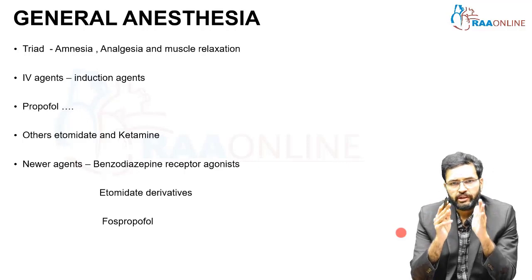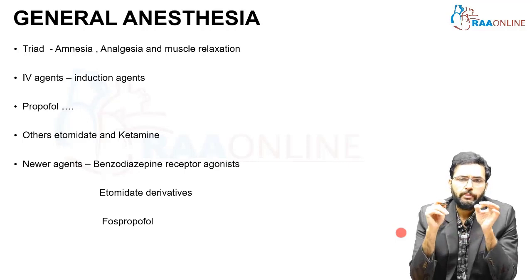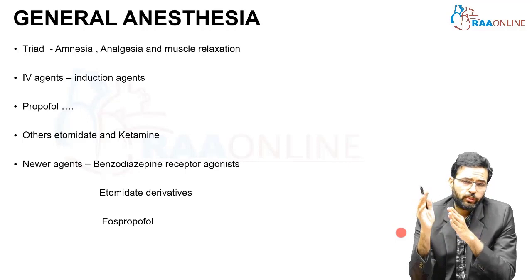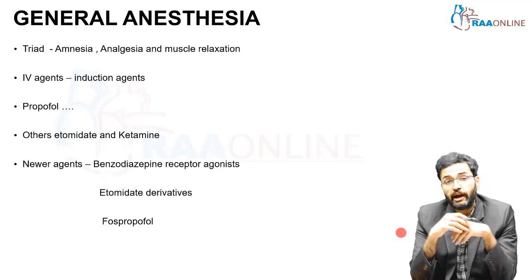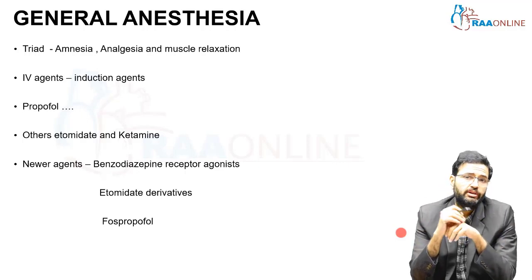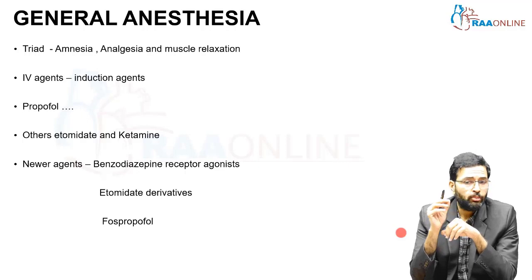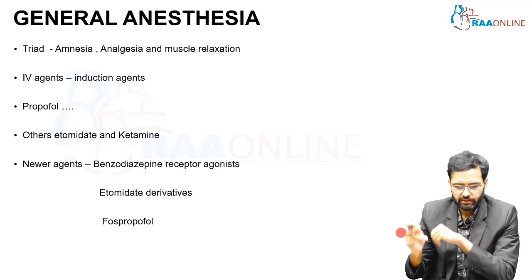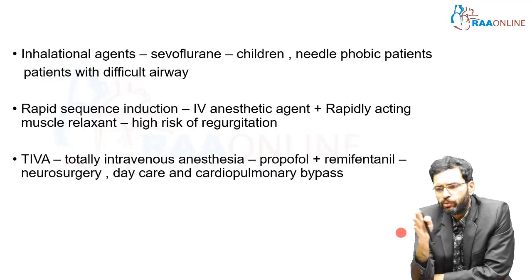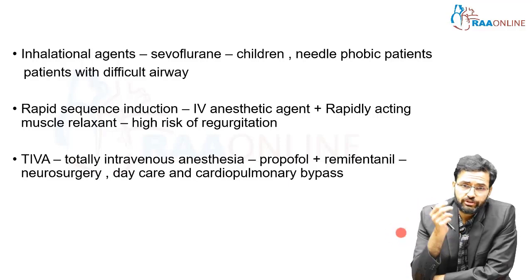General anesthesia involves two important phases: induction and maintenance. Induction is generally carried out by administering intravenous agents. What was initially used was thiopentone, and it has now been replaced by a safer drug, propofol. Other agents used for induction include etomidate and ketamine. Newer agents like benzodiazepine receptor agonists, etomidate derivatives, and phosphopropofol are now under study. Inhalational induction agents such as these are considered less irritant and more acceptable compared to IV induction agents.